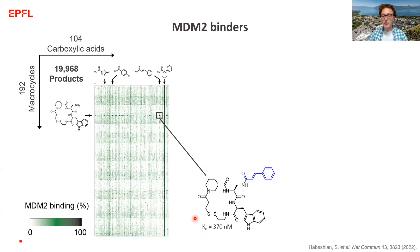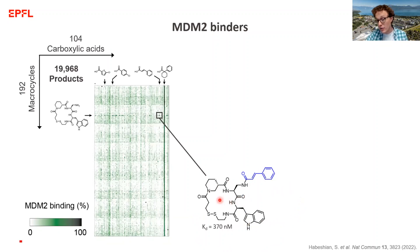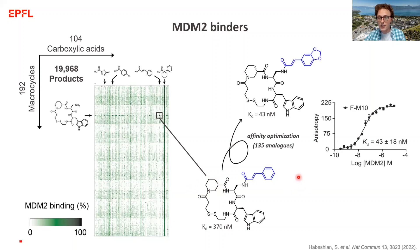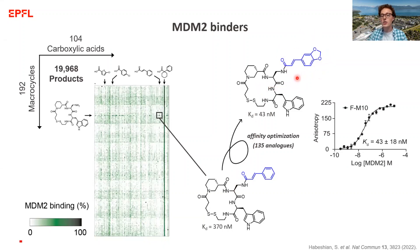This was a good starting point for a second iteration. Knowing we have this hit scaffold containing four building blocks, we made a second library where we changed each building block with approximately five different close analogs and made a subset of those combinations to improve binding affinity. We did this with 135 analogs. The original hit macrocycle scaffold remained the best, but we found a more optimal carboxylic acid which improved the binding affinity by around nine-fold.